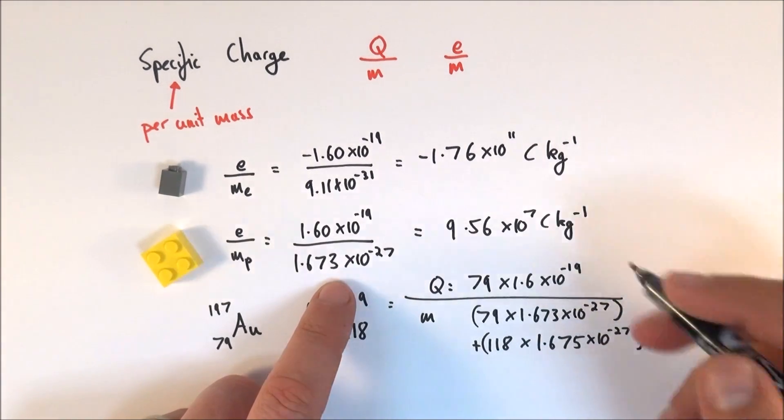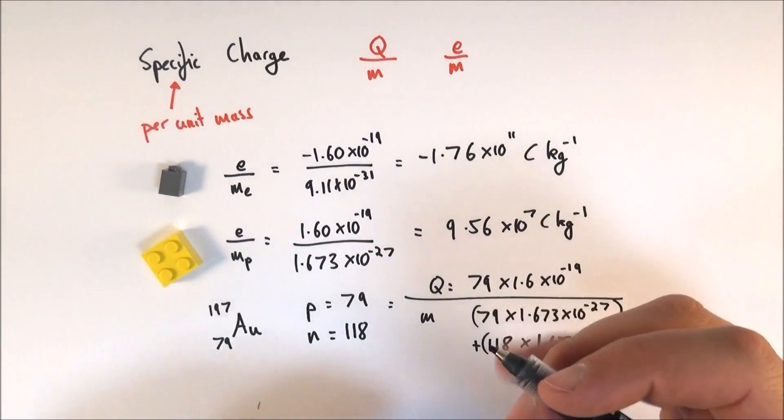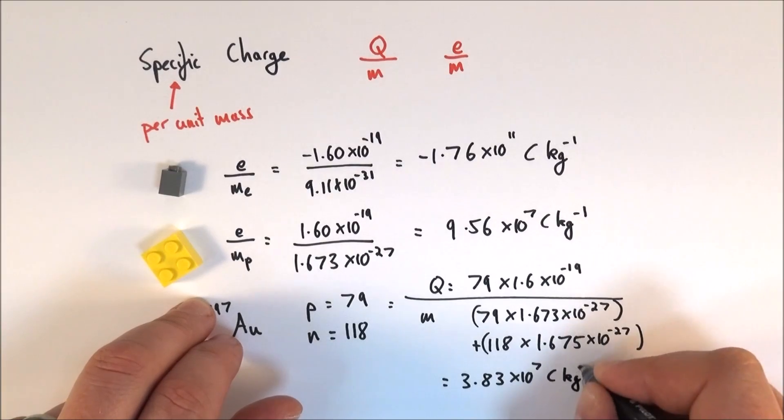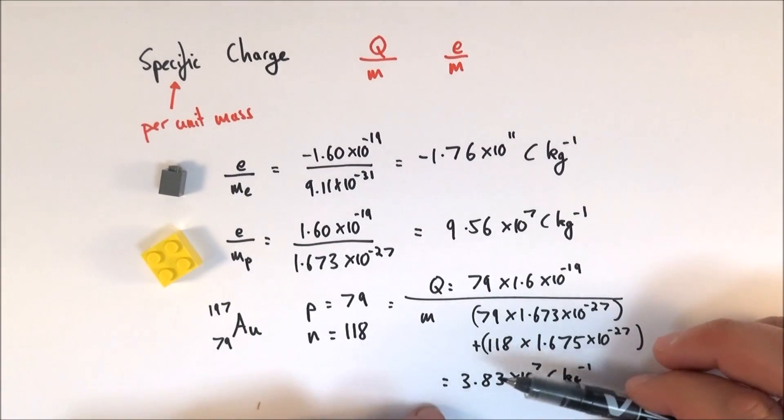You can work this out on your calculator. I've already done it. In fact, the charge to mass ratio of a gold nucleus is about 3.83 times 10 to the 7 coulombs per kilogram. So a lot less than just the proton, but that's because you've got a load of neutrons in there as well which sort of dilute this kind of charge.